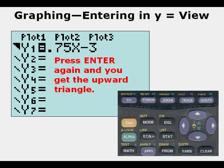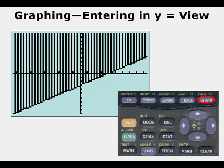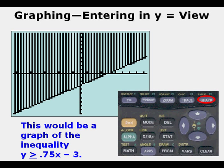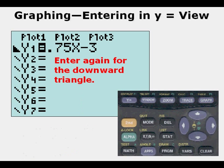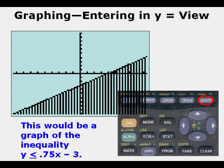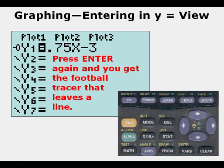If we press Enter again in the far left, we get an upward triangle — when graphed, this represents the inequality y is greater than or equal to 0.75x minus 3. If we press Enter again, we get a downward triangle, which represents the inequality y is less than or equal to 0.75x minus 3.